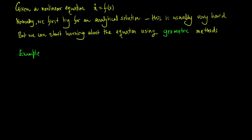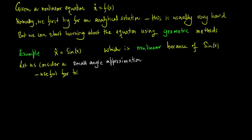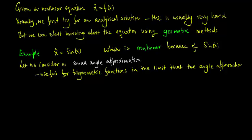Here is an example: x dot is equal to sin x, which is non-linear because of the sin x term. Let us first consider a small angle approximation, which is useful for trigonometric functions in the limit that the angle approaches 0. So sin x is approximated as x, giving us dx/dt is equal to x, which is a linear equation.